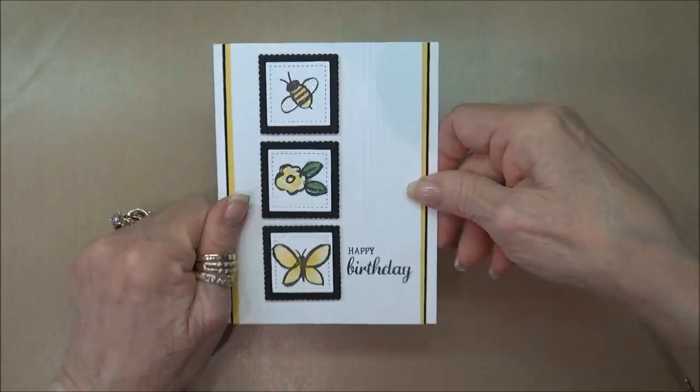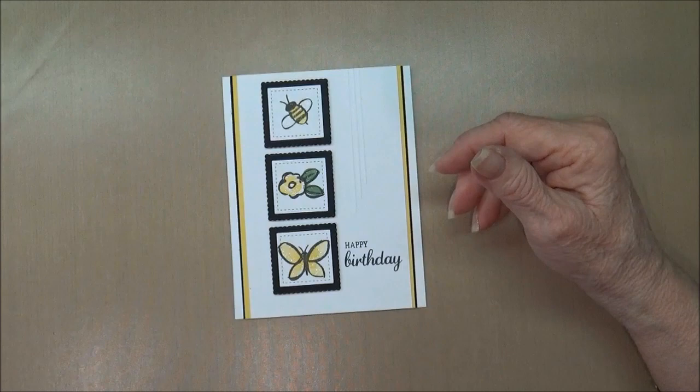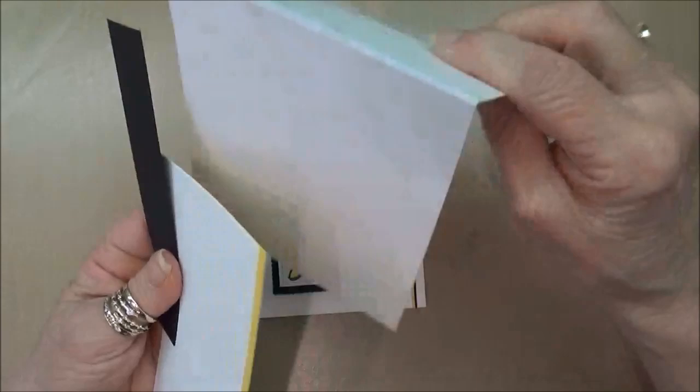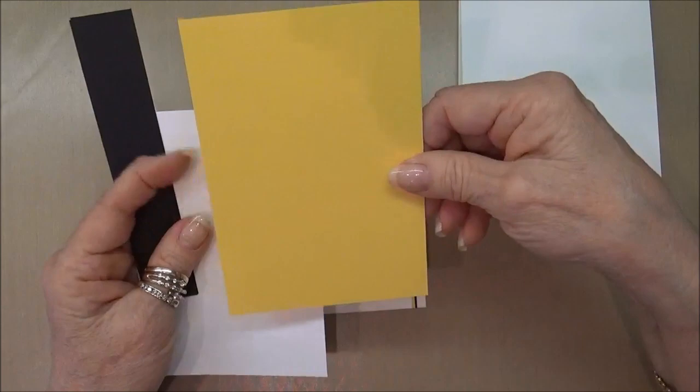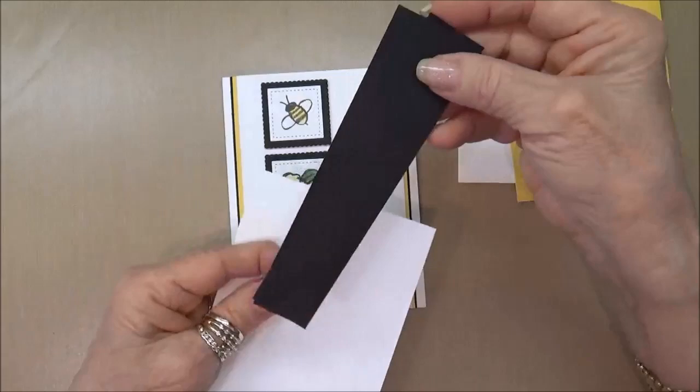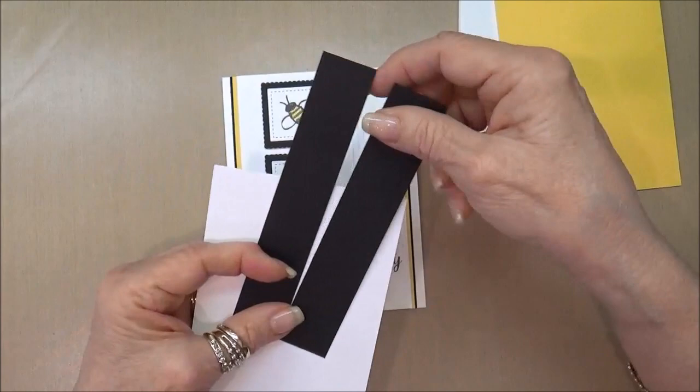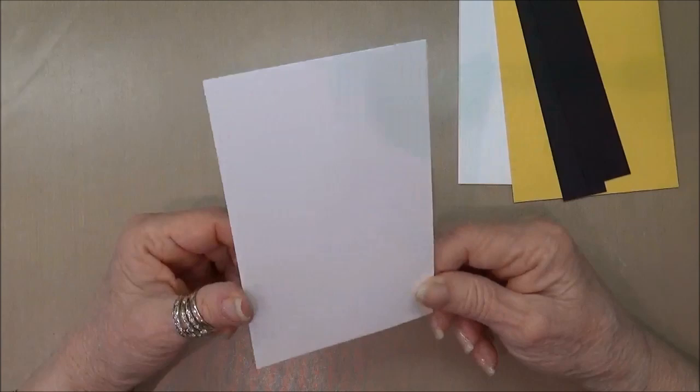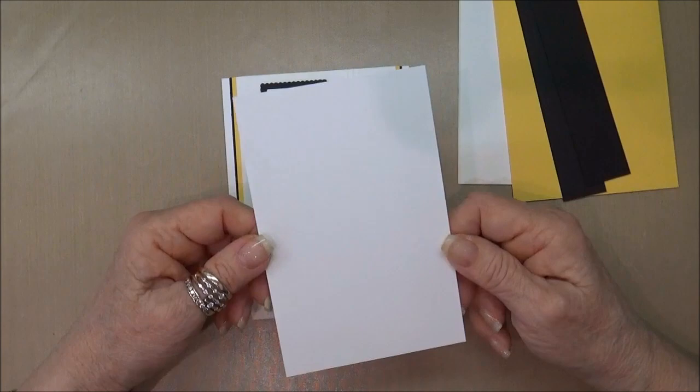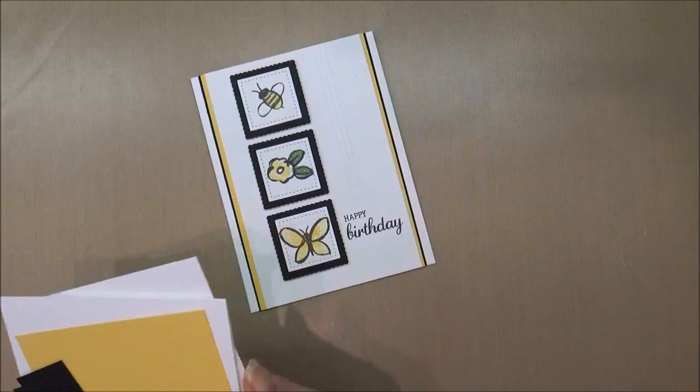So let's get started. For this card you are going to need a piece of the thick whisper white and that is four and a quarter by eleven and it's scored at five and a half and that will make a top fold card. Then you're going to need a piece of daffodil delight and this is three and three quarters by five and a half. And you'll need two pieces of basic black, these particular sheets are an inch but you can just get by also with a half an inch by five and a half and those are going to go down each side to make this little border. And then we have our card that we're going to be doing our scoring on and our stamping and this is three and five eighths by five and a half.